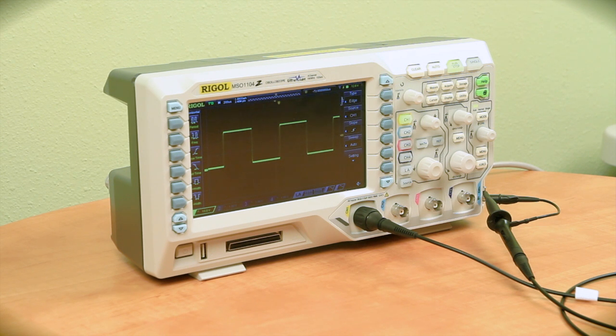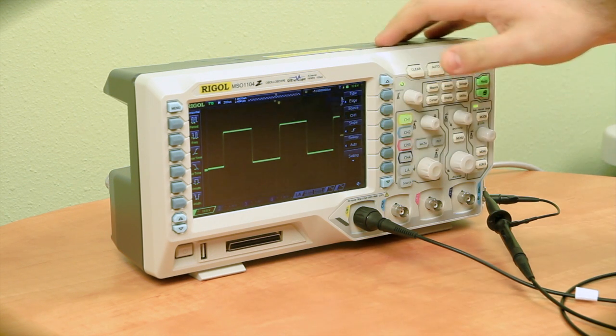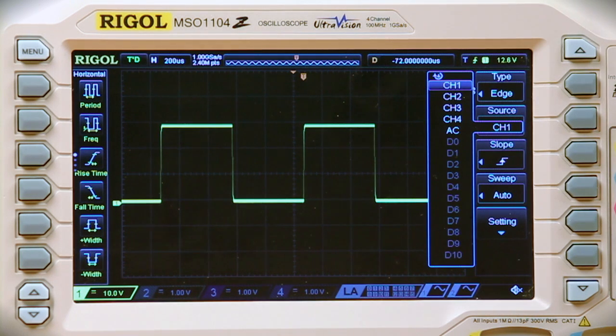Edge triggers, like most of our triggers, allow you to choose your source. For this case, I can choose between channel 1, 2, 3, and 4 and then our digital channels.